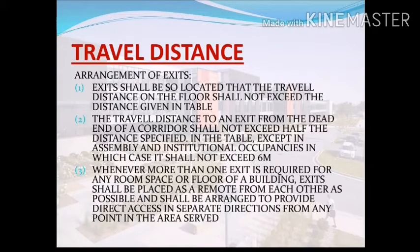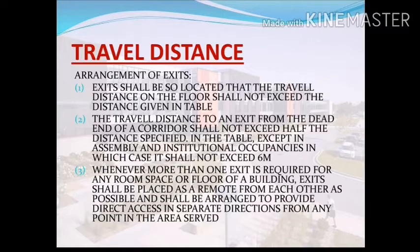What is travel distance? The arrangement of exits — like a stair or lift — and the distance between two exit arrangements, accessed through a corridor or passageway from one exit such as a stair to another exit such as a lift or stair, is called the travel distance. Some precautionary measurements are given when planning travel distance. Number one: exits shall be so located that the travel distance on the floor shall not exceed the distance given in the table.